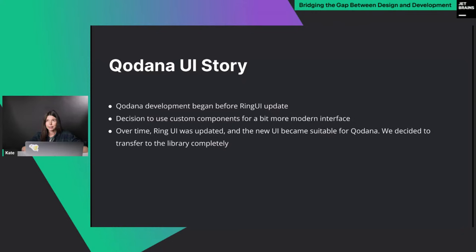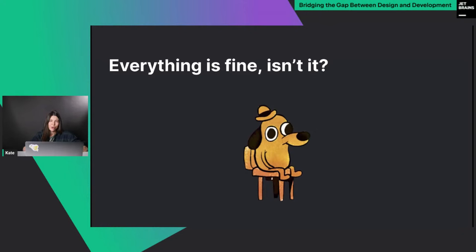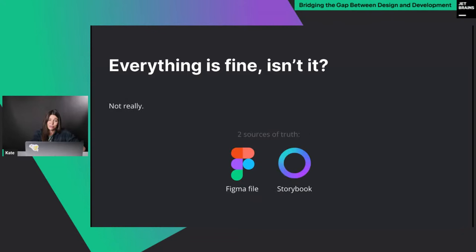When we started designing Kadana several years ago, we decided to use many custom components because at that time Ring UI wasn't updated to its latest version with clean modern design, and we wanted to be different from competitors in terms of UI. But when Ring UI was updated, we decided to switch to Ring UI completely. This might seem like it would be predictable, seamless, and consistent — in an ideal world maybe — but in our case we faced several problems during and after this transition.